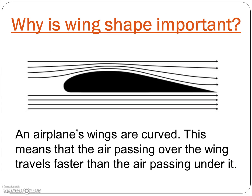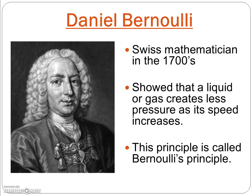So why is wing shape important? Since an airplane's wings are curved, air that passes over the wing travels further than the air that passes under the wing. However, the air passing over the wing reaches the back of the wing at the same time as the air passing under it. This means it has to travel faster to cover a greater distance in the same amount of time.